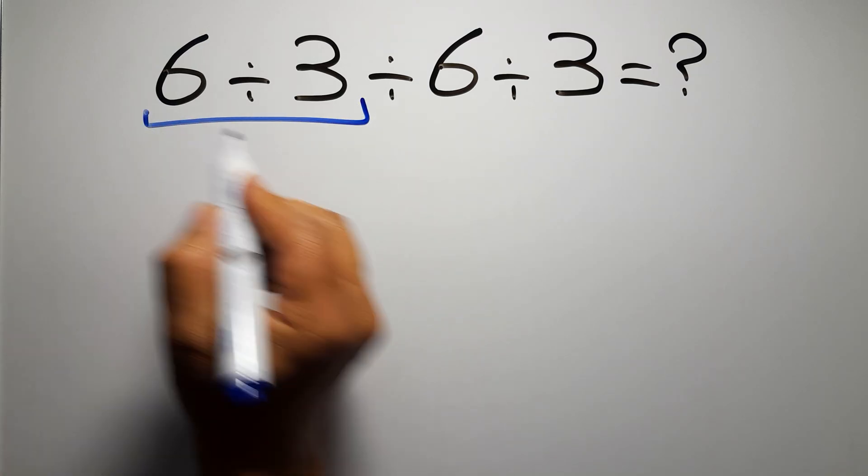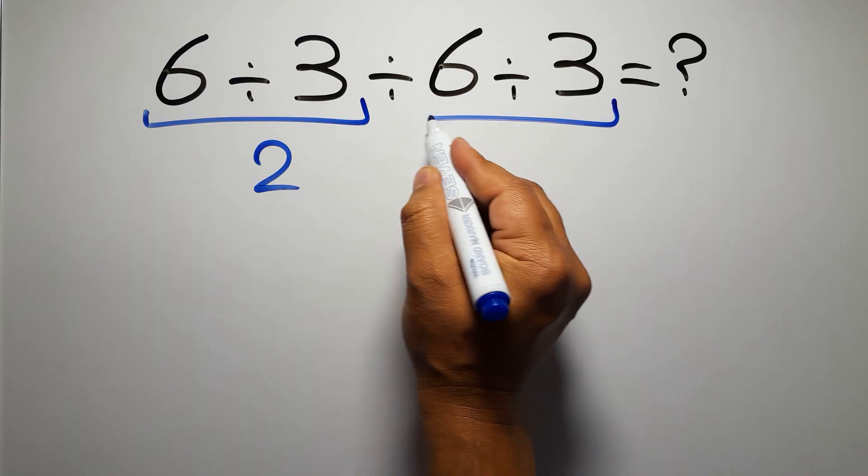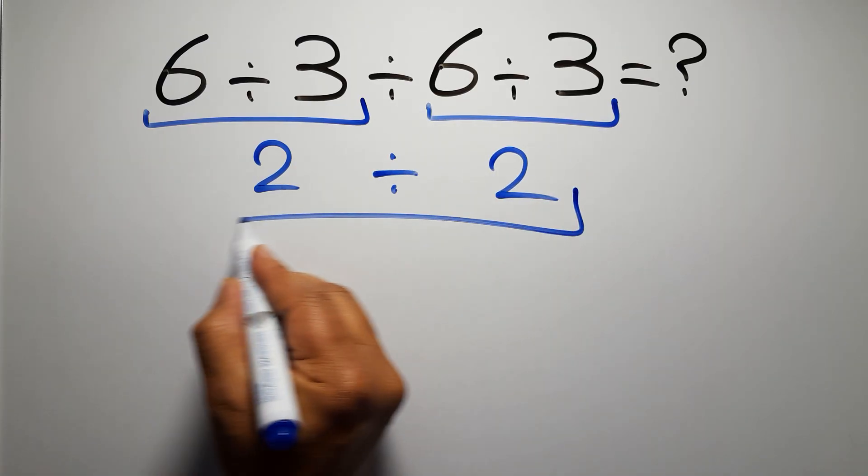6 divided by 3 gives us 2, and again here we have 6 divided by 3, so 2 divided by 2 which equals 1.